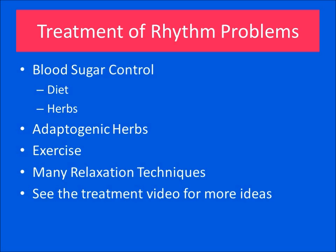Treatment for rhythm problems depends upon the results of the test — there is no cookie-cutter approach. Generally speaking, the techniques we use are as follows: first and foremost, we must get your blood sugar under good control. If you are missing meals, eating late at night, or eating the wrong foods, it will be very difficult to get your stress under control. Besides diet, we also use herbs and nutrients to regulate blood sugar if necessary. We use special herbs called adaptogens to modulate your stress response, a comprehensive exercise program, and relaxation techniques including yoga, meditation, and muscle relaxation.